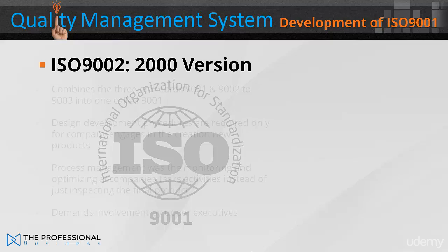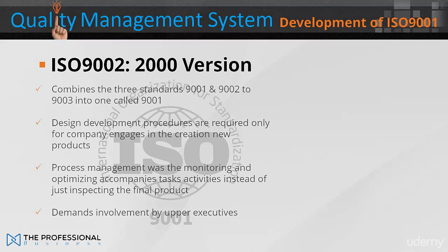The ISO 9000 2000 version combines all three standards — the 9001, 9002 and 9003 — into one called the 9001. Design and development procedures are required only for companies engaged in the creation of new products.